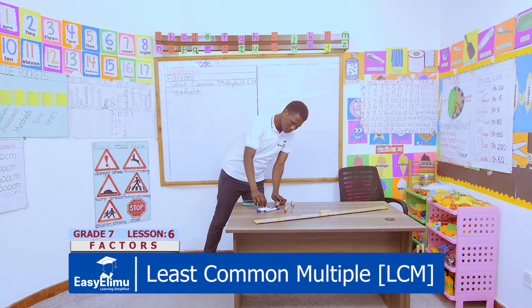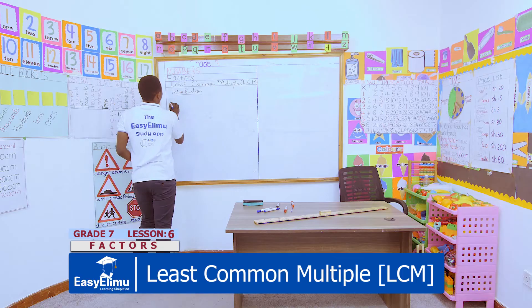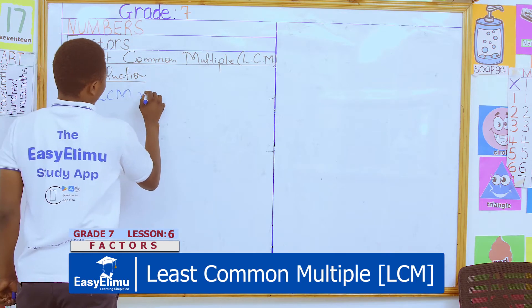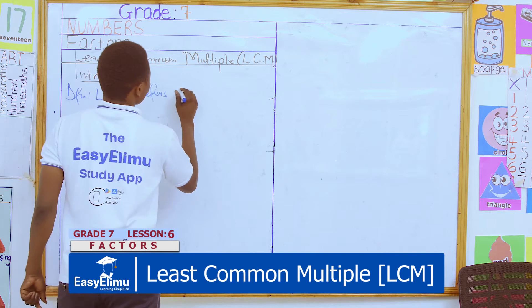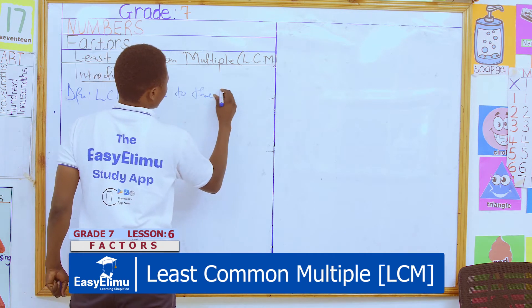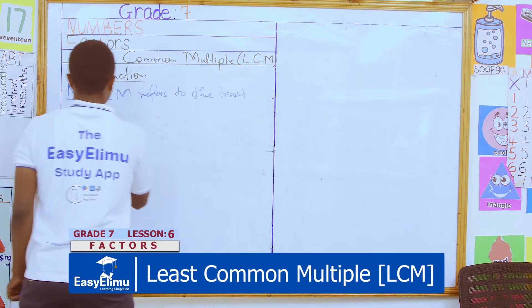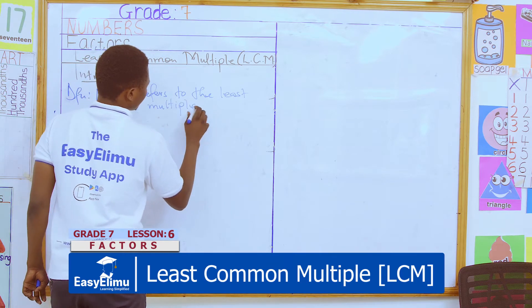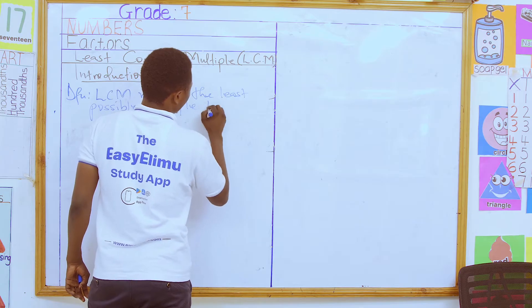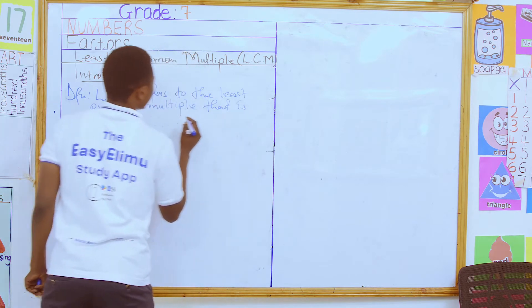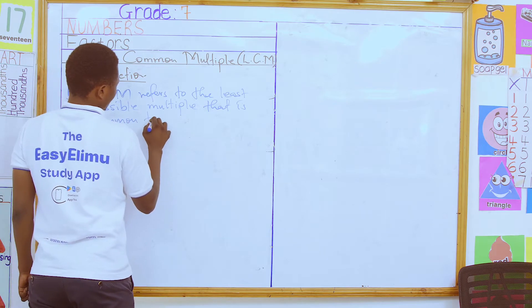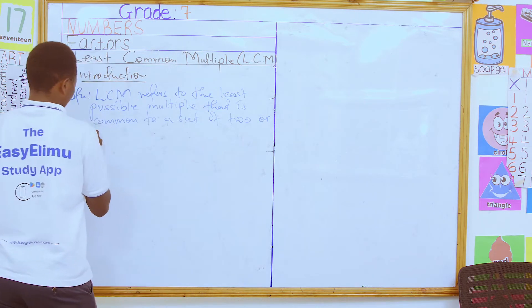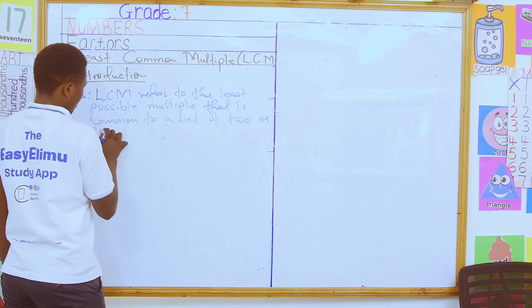As an introduction, we can simply define an LCM: LCM refers to the least possible multiple that is common to a set of two or more numbers.